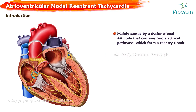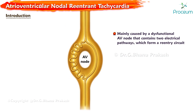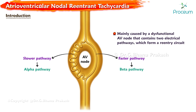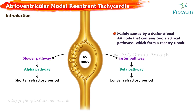AVNRT is mainly caused by a dysfunctional AV node that contains two electrical pathways which form a re-entry circuit. The slower pathway is called the alpha pathway, and the faster pathway is called the beta pathway. The alpha pathway has a shorter refractory period than the beta pathway.